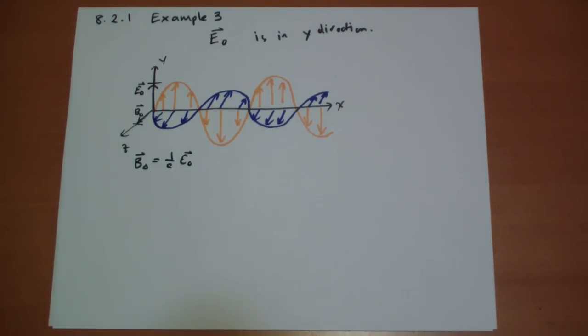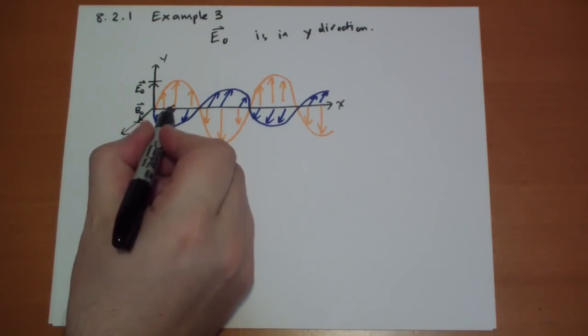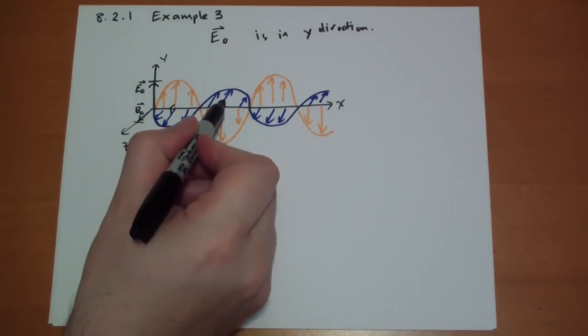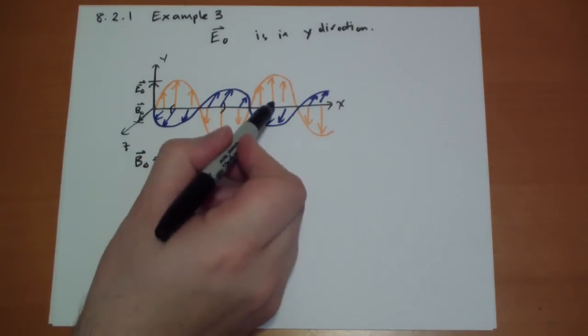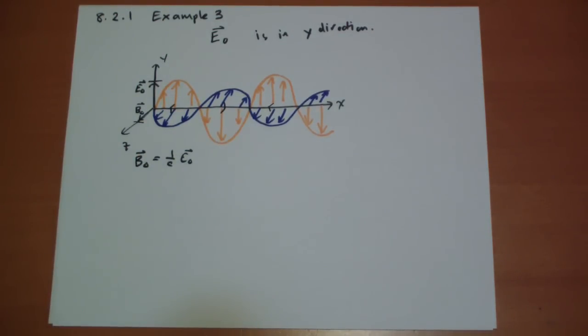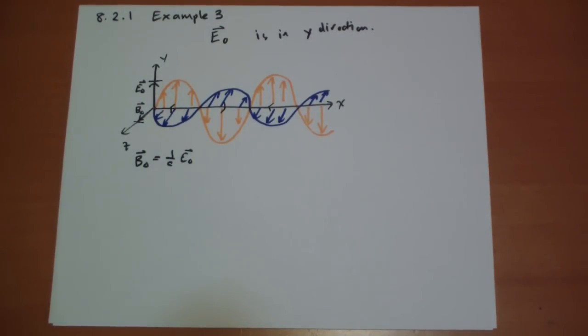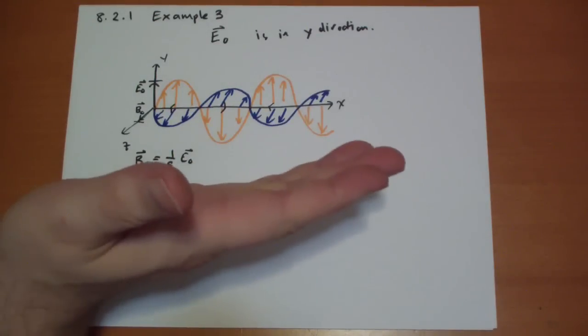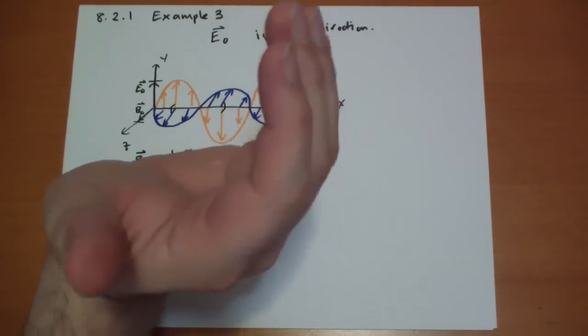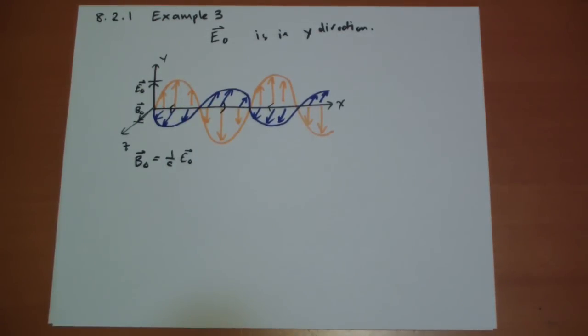So for this wave, if we're given E-naught, we know everything we need to know about the B field, and we know that they're going to be perpendicular to each other. And maybe I can make this more clear by drawing little right angles like this. Okay, so these are always perpendicular to each other. E cross B will give you the direction of motion. If you're given E in the direction of motion, you start in the direction of motion, curl in the E field, and then you get the B field.